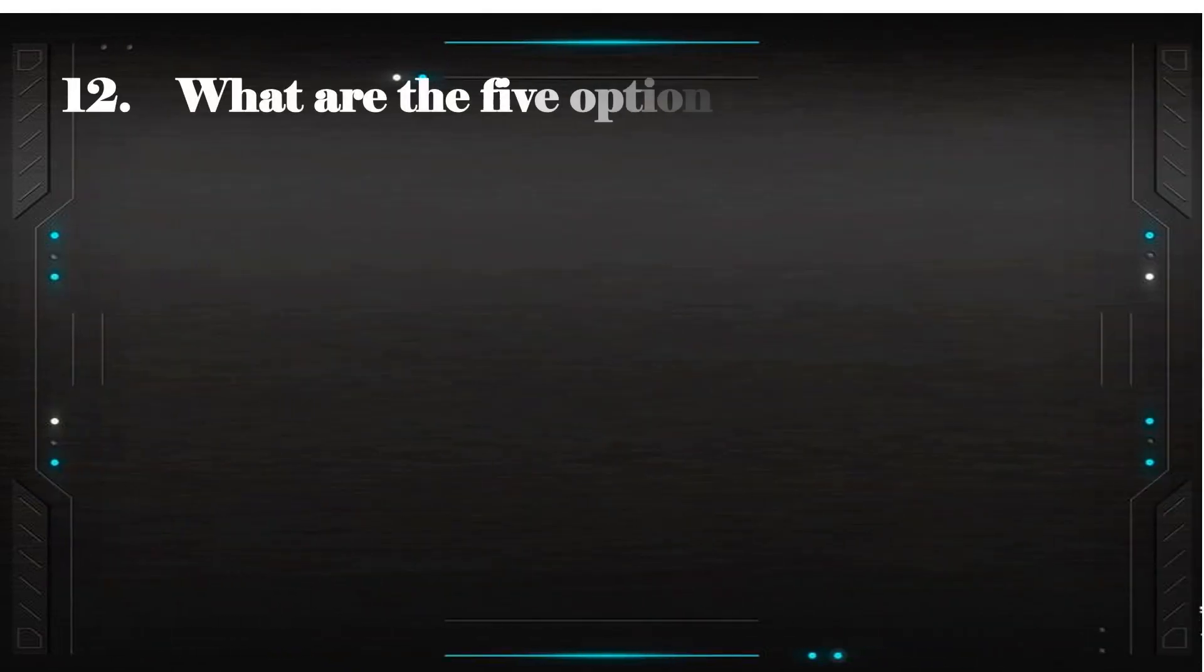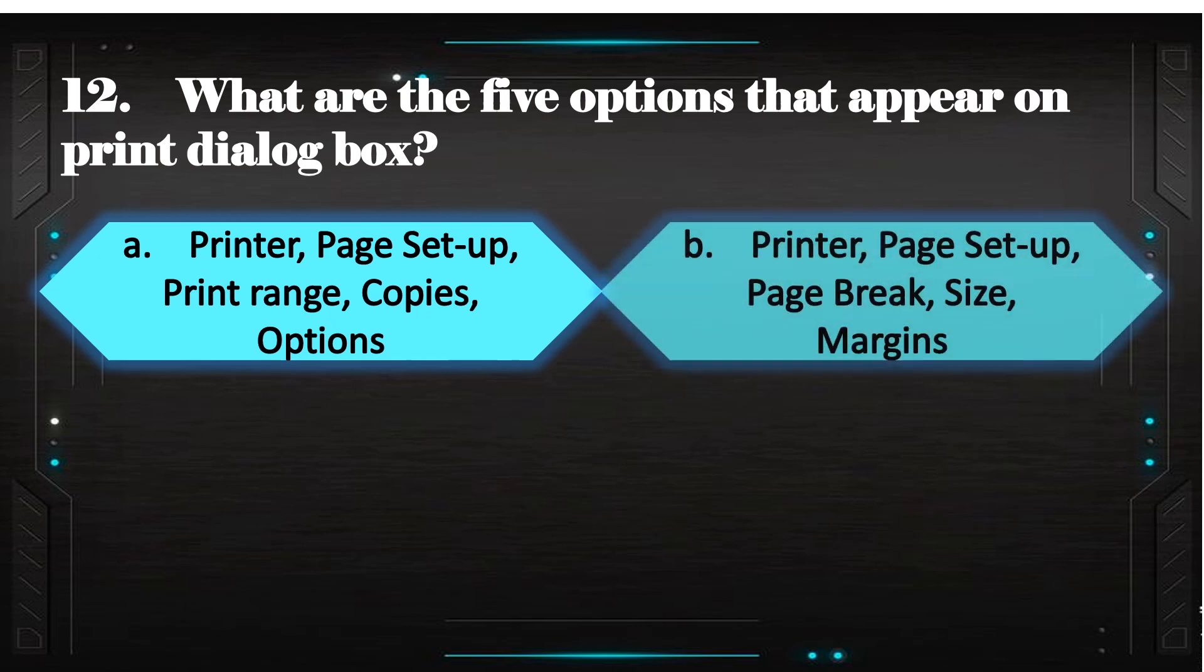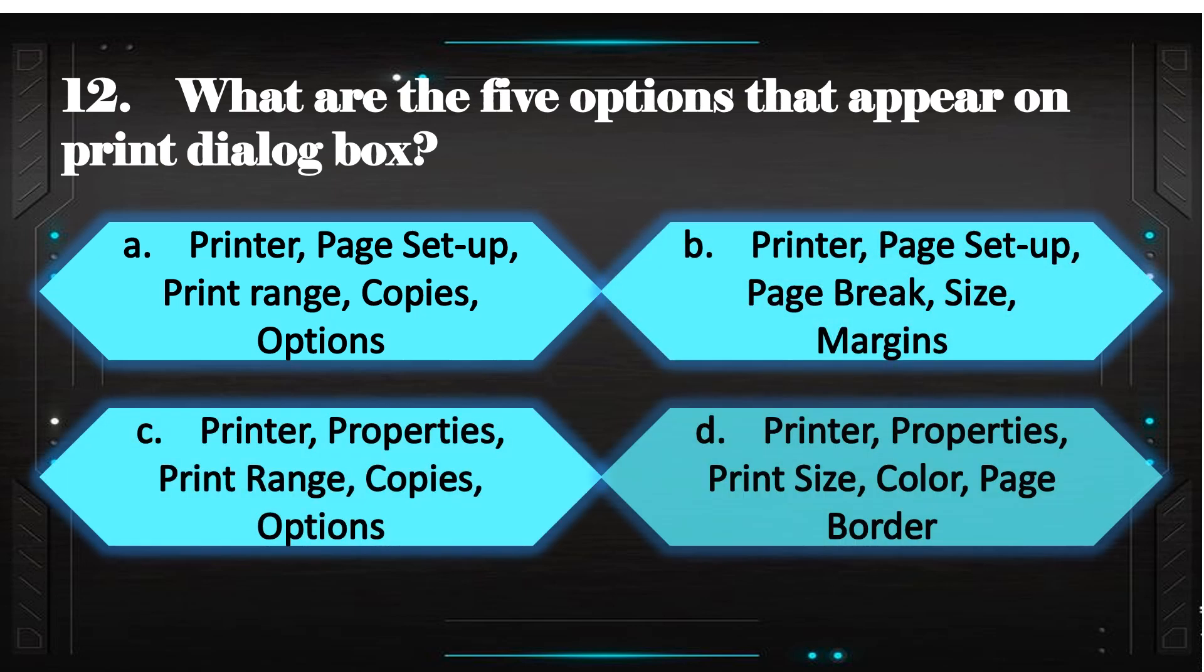What are the 5 options that appear on print dialog box? Answer: C. Printer, Properties, Print range, Copies, Options.